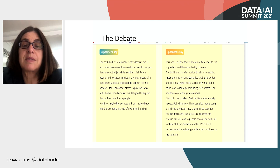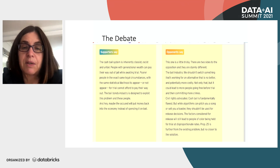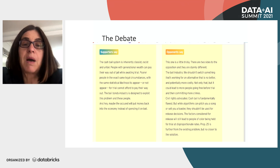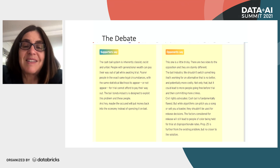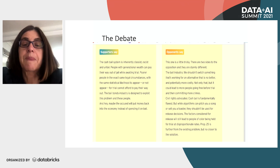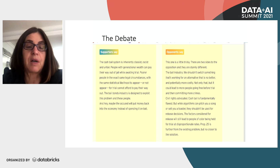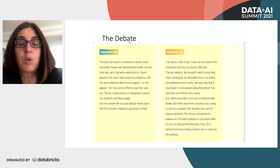The interesting thing is that civil rights advocates were very much against this bill — not because they think cash bail is better, but their position was that if you're going to replace it with a risk assessment system, some automatic machine learning algorithm, you might be replacing one bad system with another, which is going to last for the foreseeable future. A quote from the website: 'while algorithms can pitch you a song or sell you a toaster, they should not be used for release decisions.'